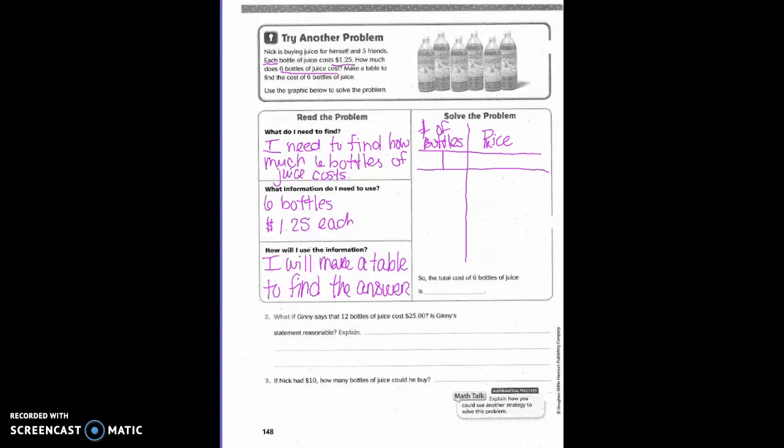So, one bottle is $1.25. Two bottles would be $2.50. Three bottles, $3.75. Four bottles, $5. Five bottles, $6.25. And six bottles, $7.50. So the total cost of six bottles of juice is $7.50.